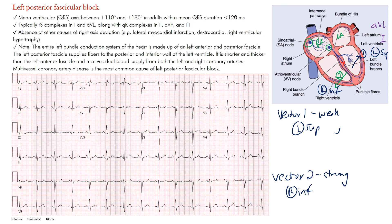In leads I and AVL, vector one produces a small upstroke — the R wave. Then vector two, the stronger one with slow cell-to-cell depolarization heading away from those leads, produces a deep S wave. So in leads I and AVL you get an RS complex.